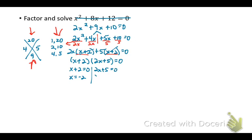And then set those each equal to 0 and solve. So you'll get x equals negative 2 and x equals negative 5 halves or negative 2 and a half.